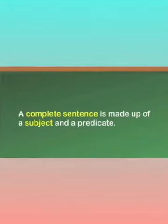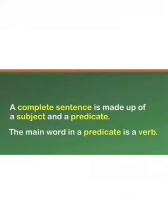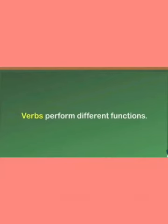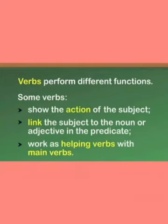A complete sentence is made up of a subject and a predicate, as we have seen in the sentences topic. The main word in a predicate is a verb. Now, verbs perform different functions: some verbs show the action of the subject; some link the subject to the noun or adjective in the predicate; and some work as helping verbs with main verbs.